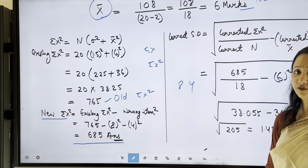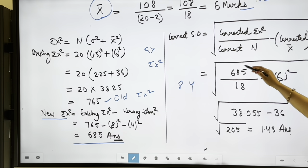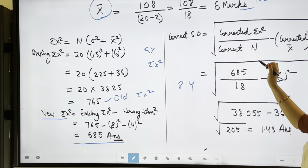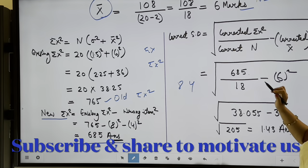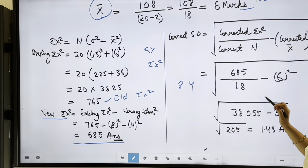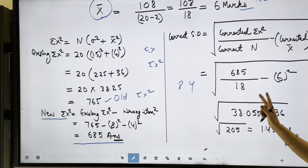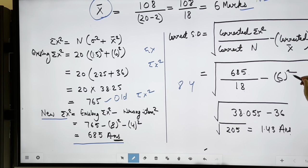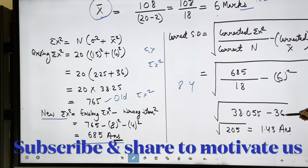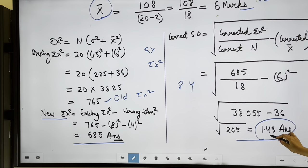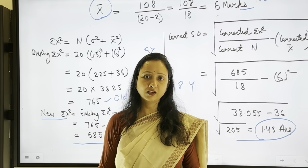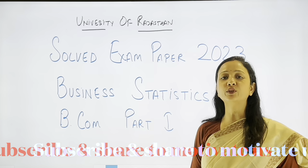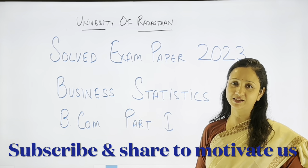Existing Σx² = 765. New Σx² = 765 minus 64 minus 16 = 685. New standard deviation = √(685/18 minus 6²) = √(38.06 minus 36) = √2.06 ≈ 1.43. So the new x̄ = 6 marks and new standard deviation = 1.43 marks.